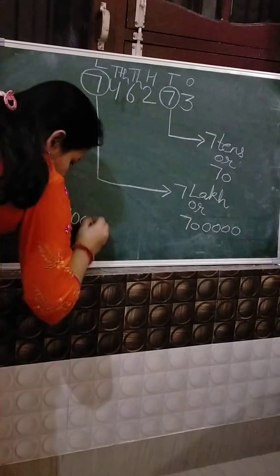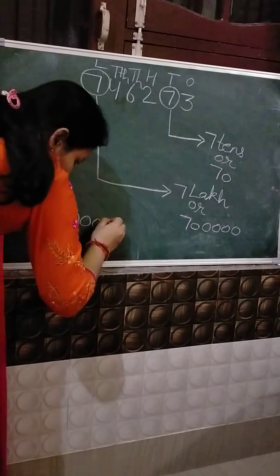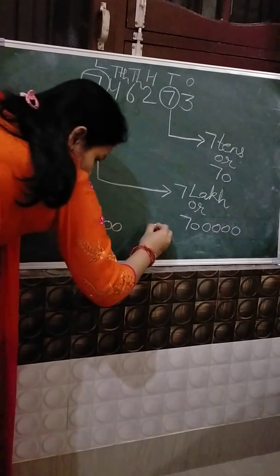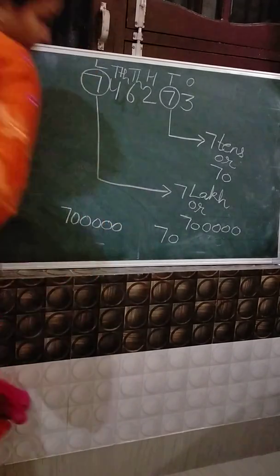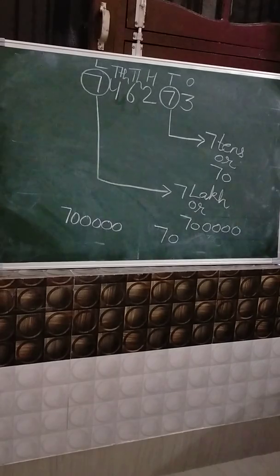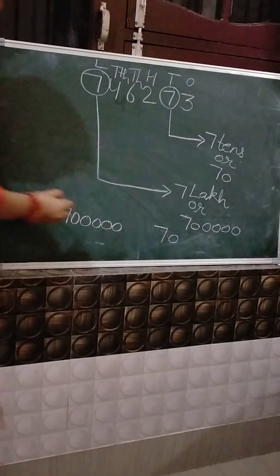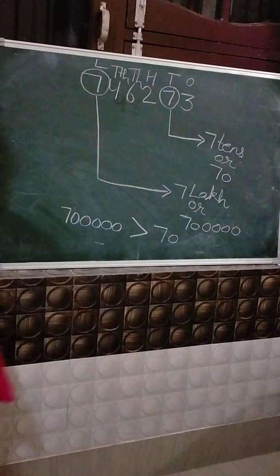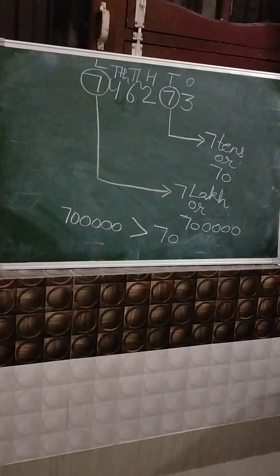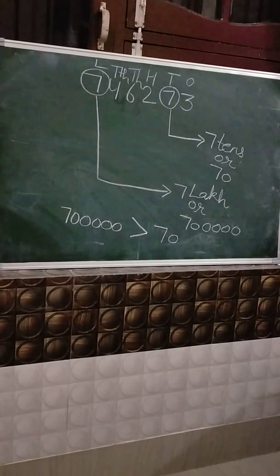The first 7 has place value of 7 lakh and the second has place value of 70. Comparing both place values, 7 lakh is greater than 70. So 7 lakh is greater.